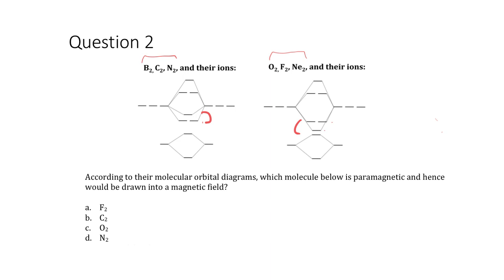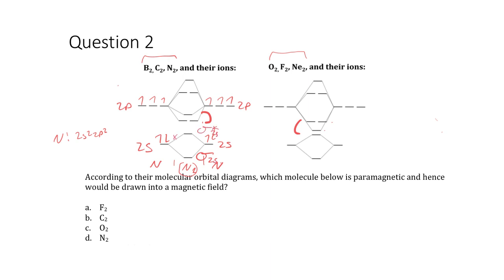The two diagrams differ only in whether the pi 2p or sigma 2p comes first in energy. For the labeling of the diagram, we have 2s orbitals and 2p orbitals for the native atoms on either side. Picture nitrogen on each side for N2 — its configuration is 2s², 2p³. In the middle of the diagram you get sigma 2s, sigma* 2s, then pi 2p, sigma 2p, pi* 2p, and sigma* 2p.